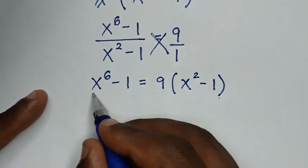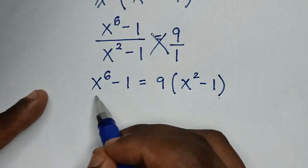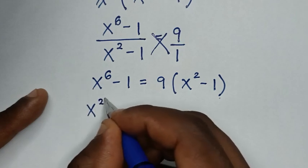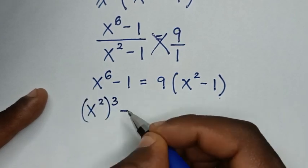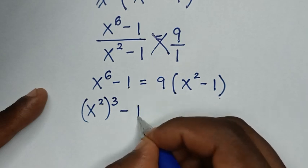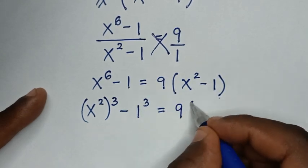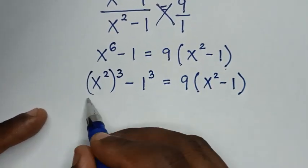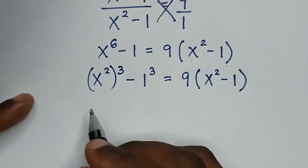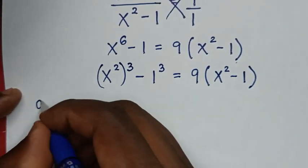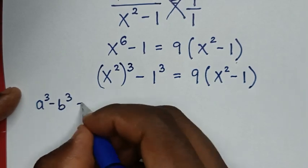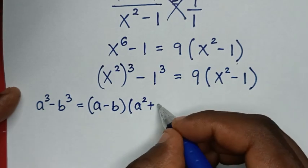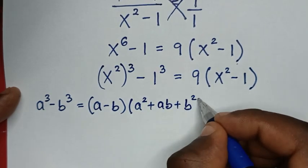Then, into here, x power of 6 minus 1, we make it in the form of difference of 2 cubes. So, x power of 6 into cubes — it is x power of 2 bracket power of 3. Then, minus 1 is same into cube — it is 1 power of 3. Then, is equal to 9 bracket x square minus 1 bracket. From this part, which is in the form of difference of 2 cubes, we will apply the rule: a power of 3 minus b power of 3 is equal to a minus b bracket, a square plus a b plus b square bracket.